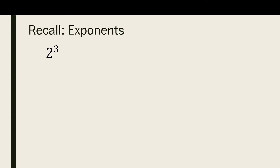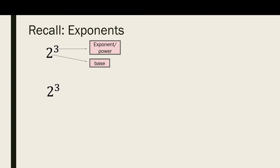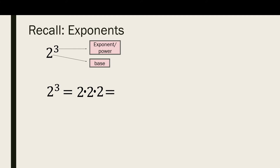For the first item, we have 2 cubed. Remember that 2 is our base and 3 is our exponent or power. The exponent tells us how many times we multiply the base by itself. Since we have 3 as the exponent, we multiply 2 by itself 3 times: 2 times 2 times 2. 2 times 2 is 4, times 2 is 8. So 2 cubed is equal to 8.